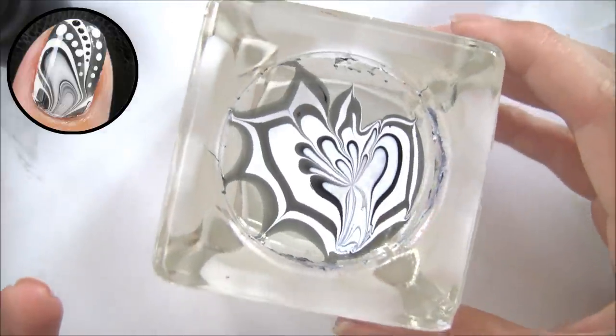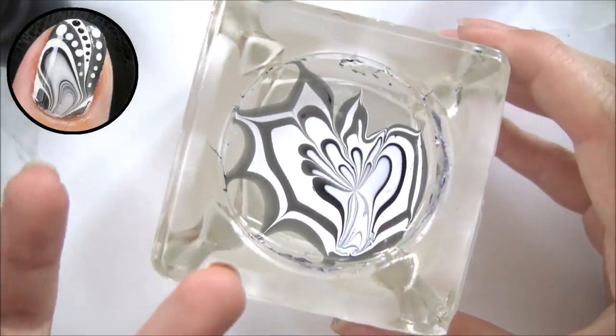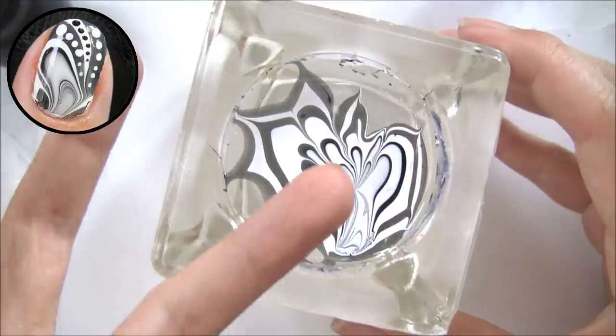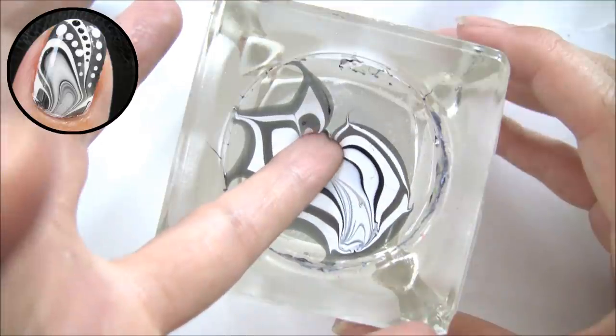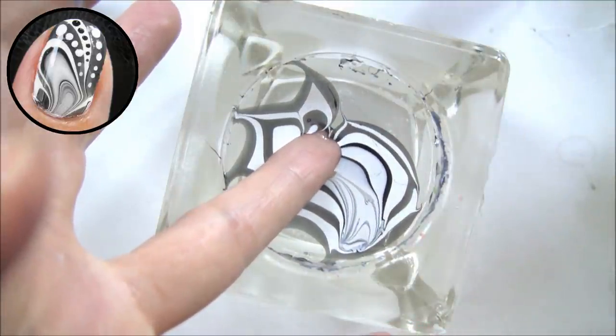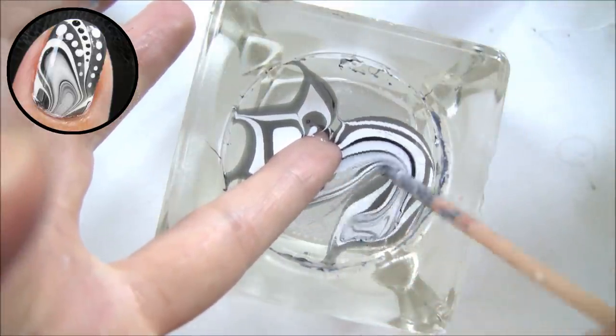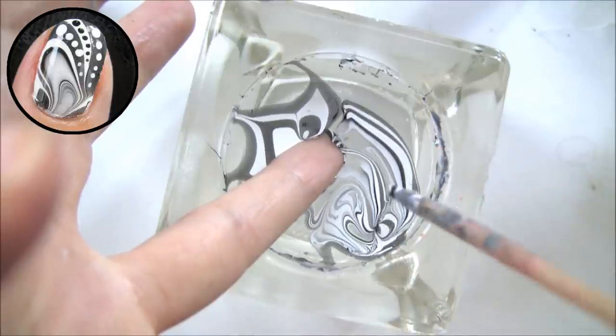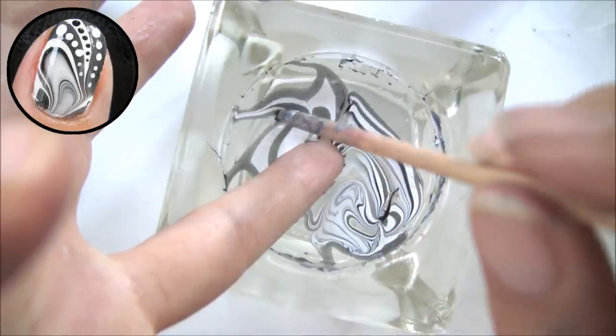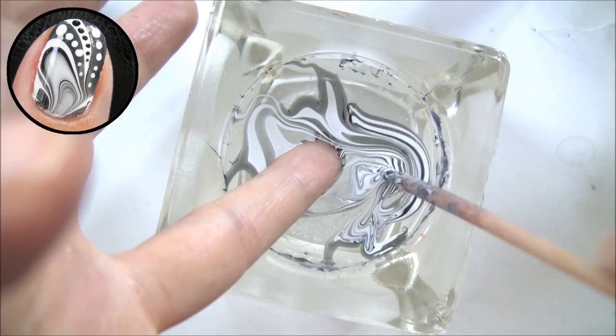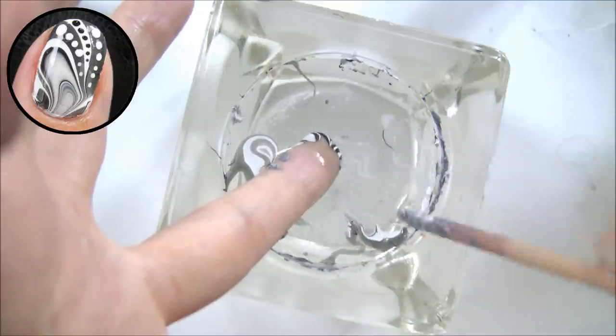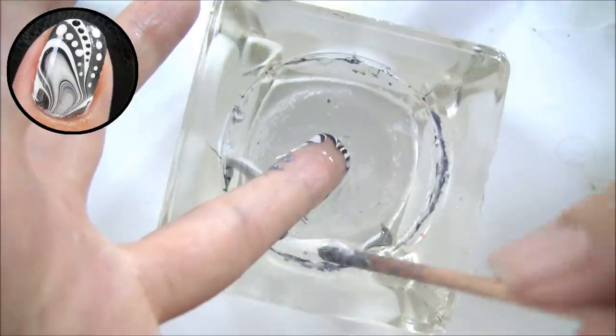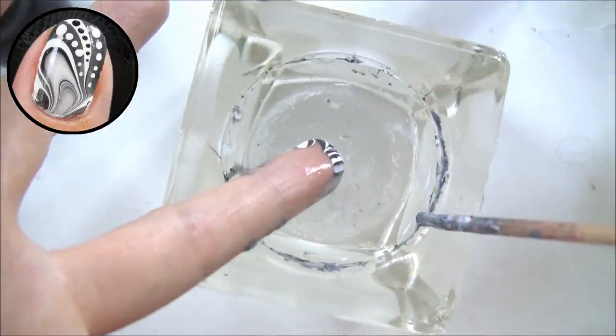Now that I have created a few petal shapes, I'm just going to turn the glass around to a position that's easiest for me to dip my finger in. Then aim where you want your design to be and lower your fingernails into the water. Hold your finger in the water and scoop away the remaining polishes from the water surface.